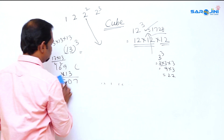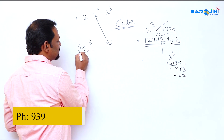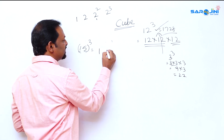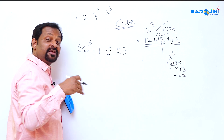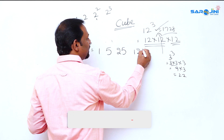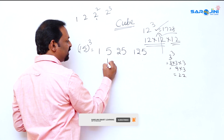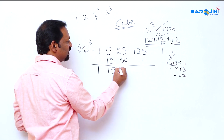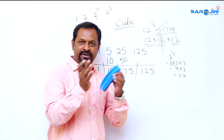This shortcut method is applicable when the cube numbers begin with 1 — like 11, 12, 13, and so on. Let's try 15 cubed. First part is 1, second part is 5. Write: 1, then 5, then five squared = 25, then five cubed = 125. Now double the middle numbers: double of 5 is 10, double of 25 is 50. We get: 1, 15, 75, 125.